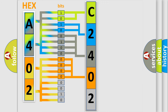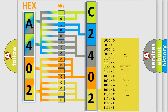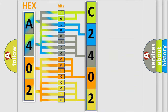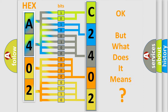A single byte conceals 256 possible combinations. We now know in what way the diagnostic tool translates the received information into a more comprehensible format. The number itself does not make sense to us if we cannot assign information about what it actually expresses.